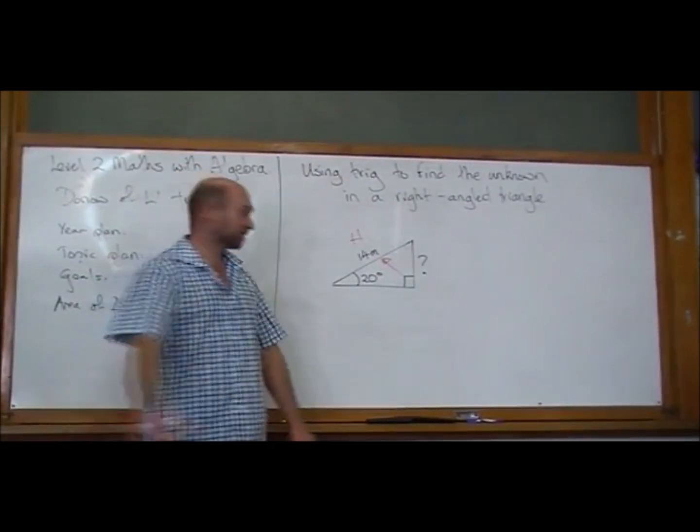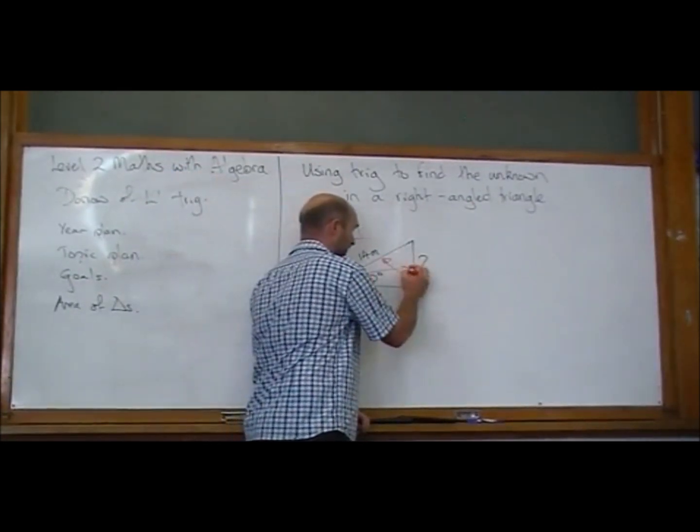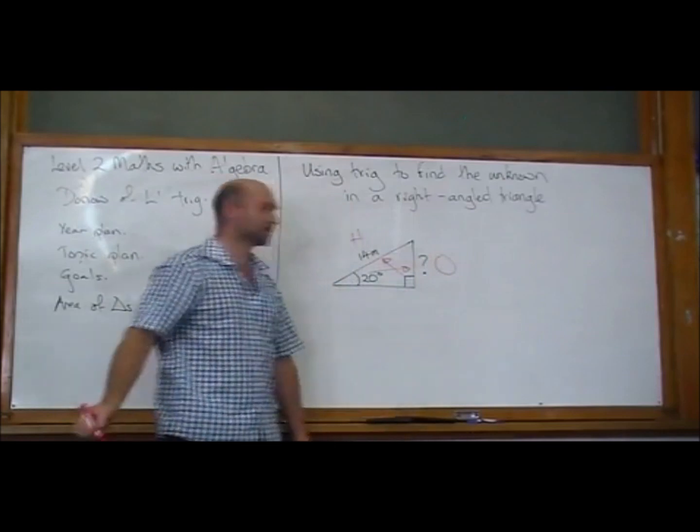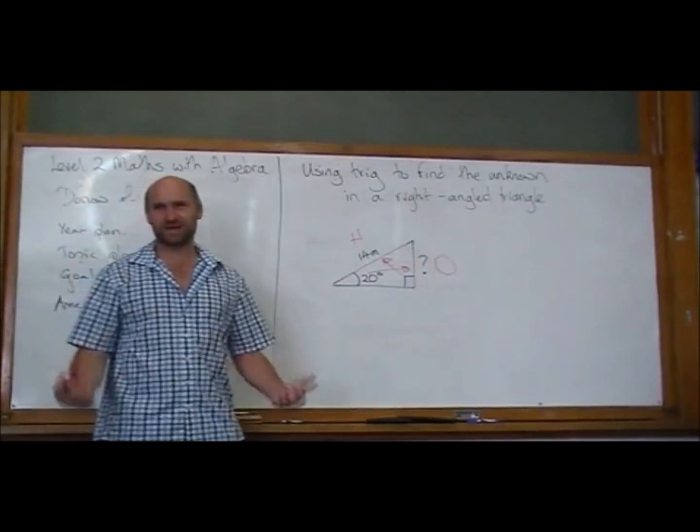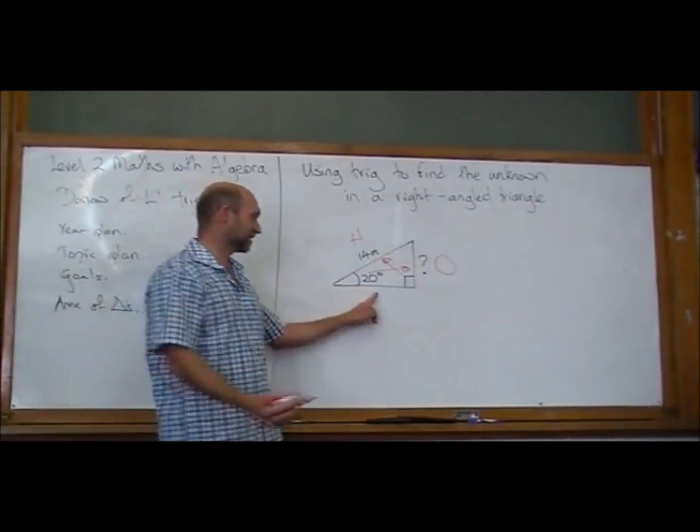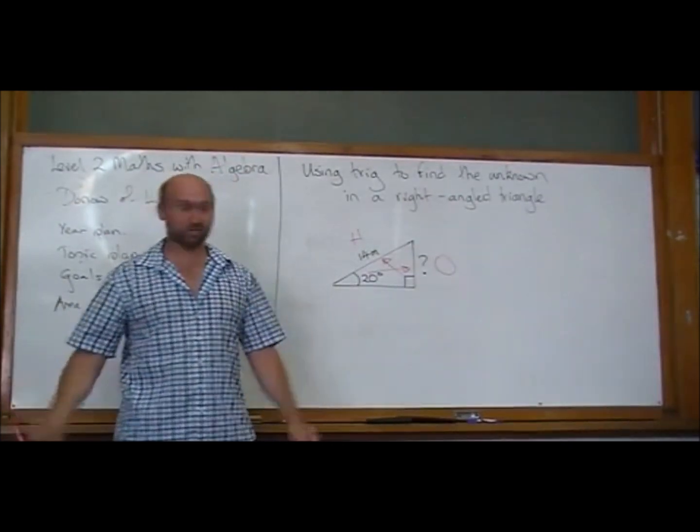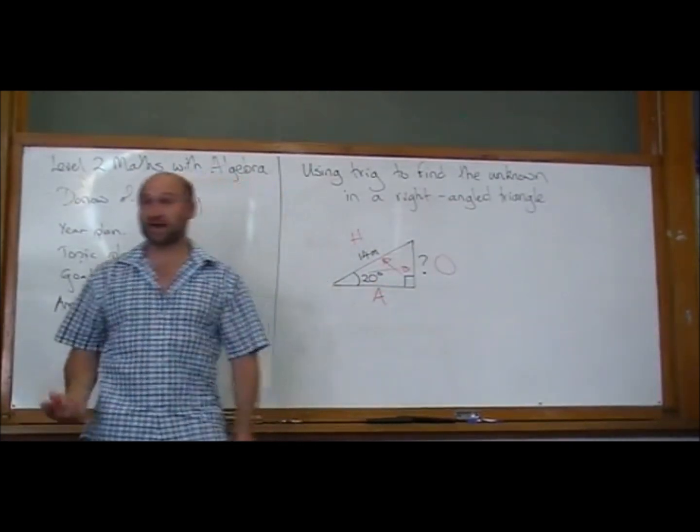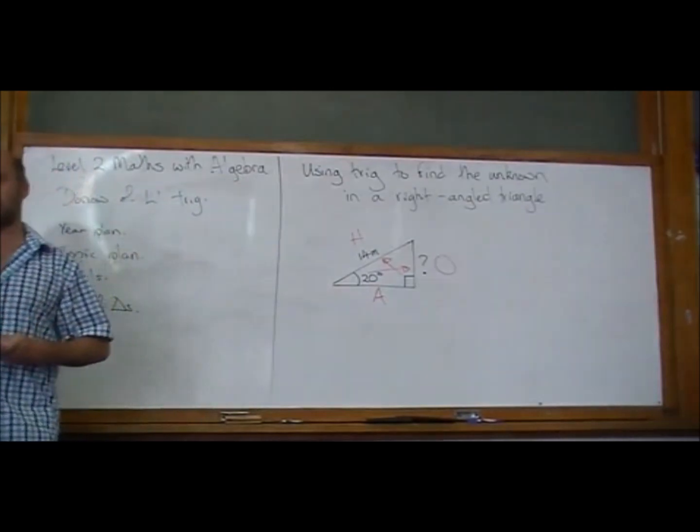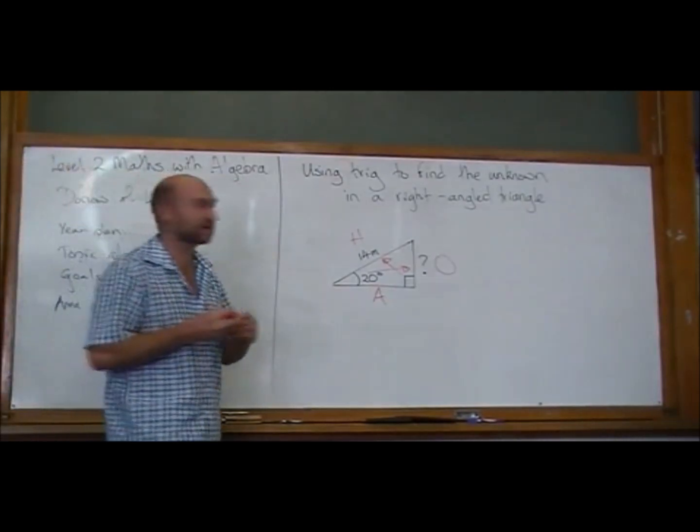If you're trying to find the opposite, you go across from the angle. That's going to be the opposite. And the adjacent, adjacent means next to, next to the angle, and it's not the hypotenuse, must be the adjacent. So we've labelled up the H, the O, and the A, the hypotenuse, the opposite, and the adjacent.